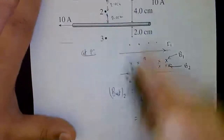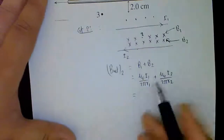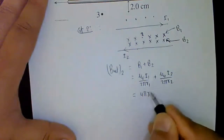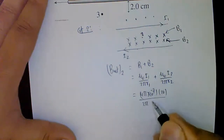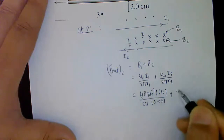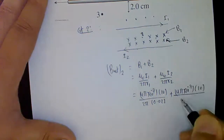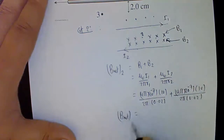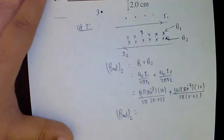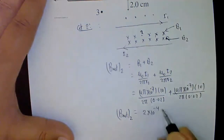Both r1 and r2 are 2 centimeters. Substituting: 4π×10⁻⁷ × 10 / (2π × 0.02) + 4π×10⁻⁷ × 10 / (2π × 0.02). Calculate that and you get the net magnetic field in region 2.